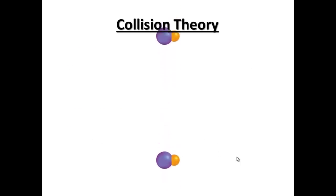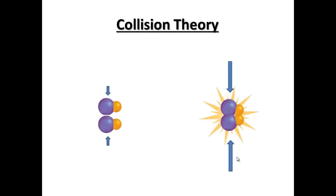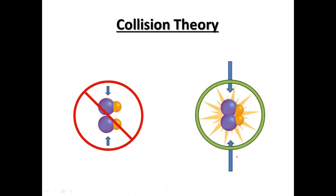If they are not moving fast enough, we don't have enough energy and their electron energy levels bounce off or they repel each other. So if they don't collide fast enough, we're not going to get a chemical reaction.